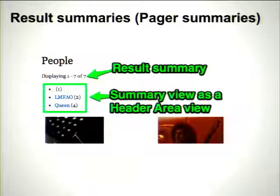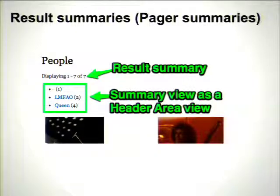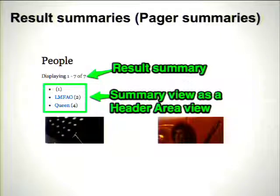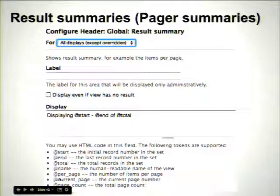Result summaries: we looked at a screenshot of this at the beginning. I only just discovered this feature in Views, so I wanted to include it — maybe everyone else knew about it already. It allows you to add a little bit of text along the lines of 'displaying 1 to 7 of 7.' It's distinct from a summary view despite the similar name. The result summary is an area plugin, so you can add it to the header, footer, or even the empty area — although adding a result summary to the empty area would say something like 'displaying 0 to 0 of 0,' which wouldn't be very useful. You can configure the text and include various different numbers in that text.